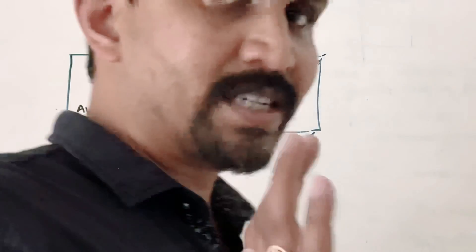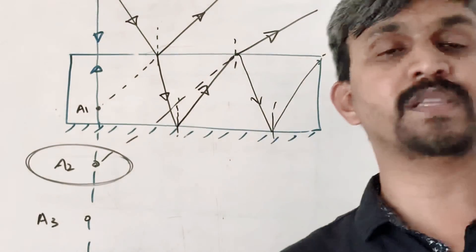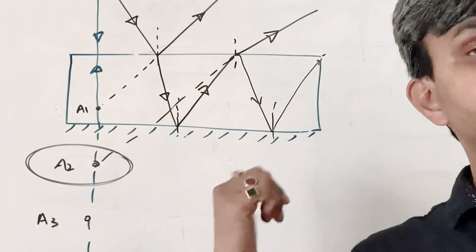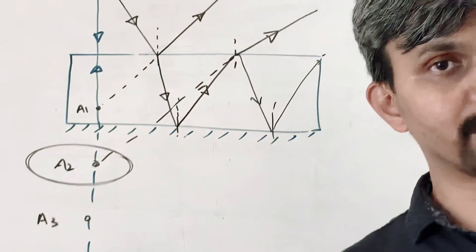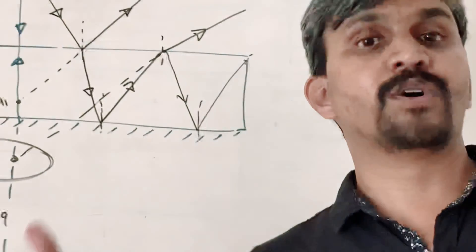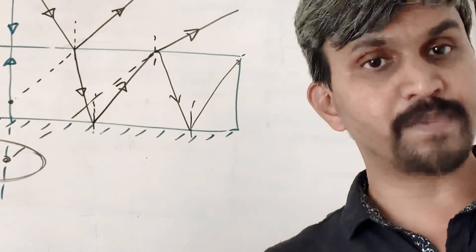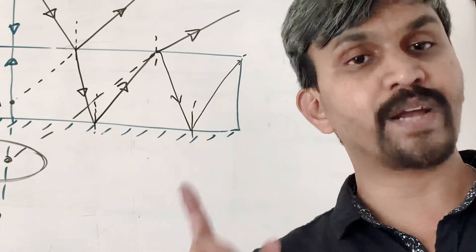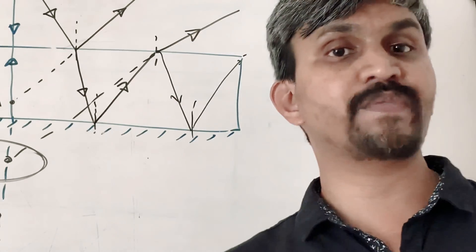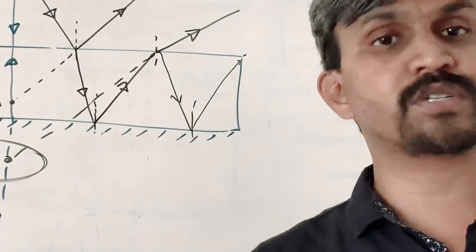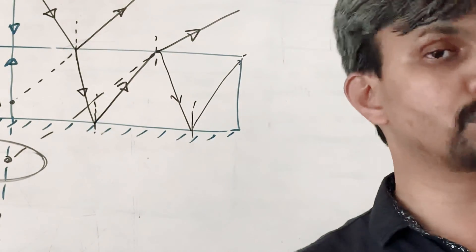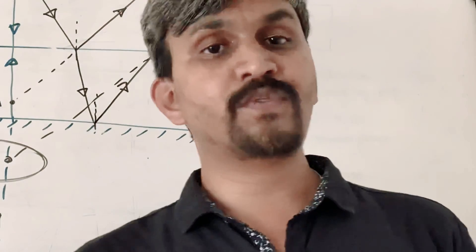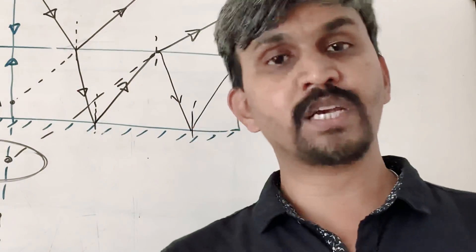That's it for this video. The main parts covered are: what are the laws of refraction, what is lateral displacement and what factors it depends on, and what is refractive index. Refractive index is the ratio of two similar quantities, so it has no unit — it is a pure number. Thank you.